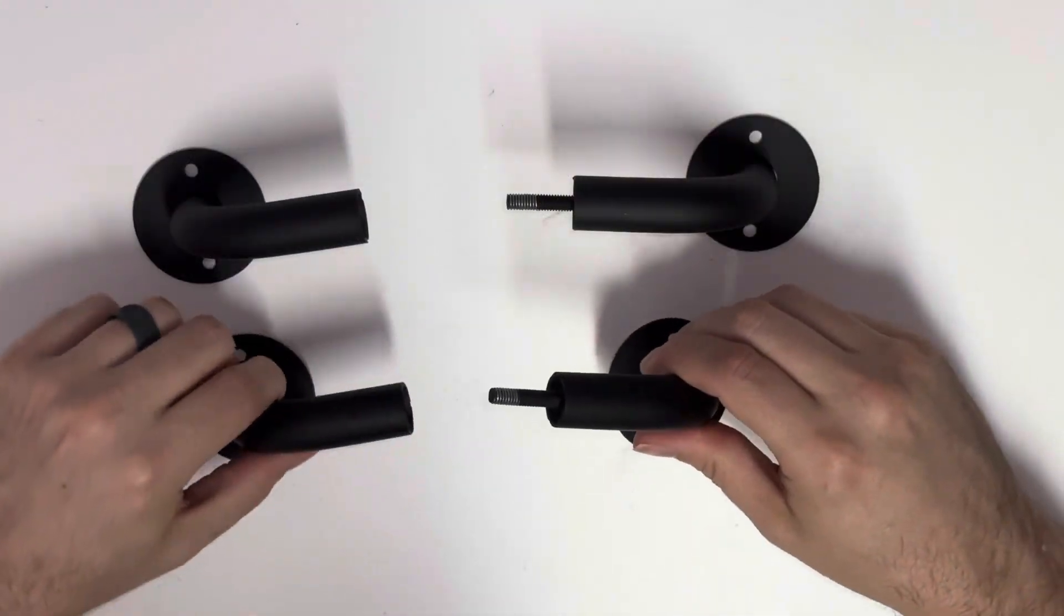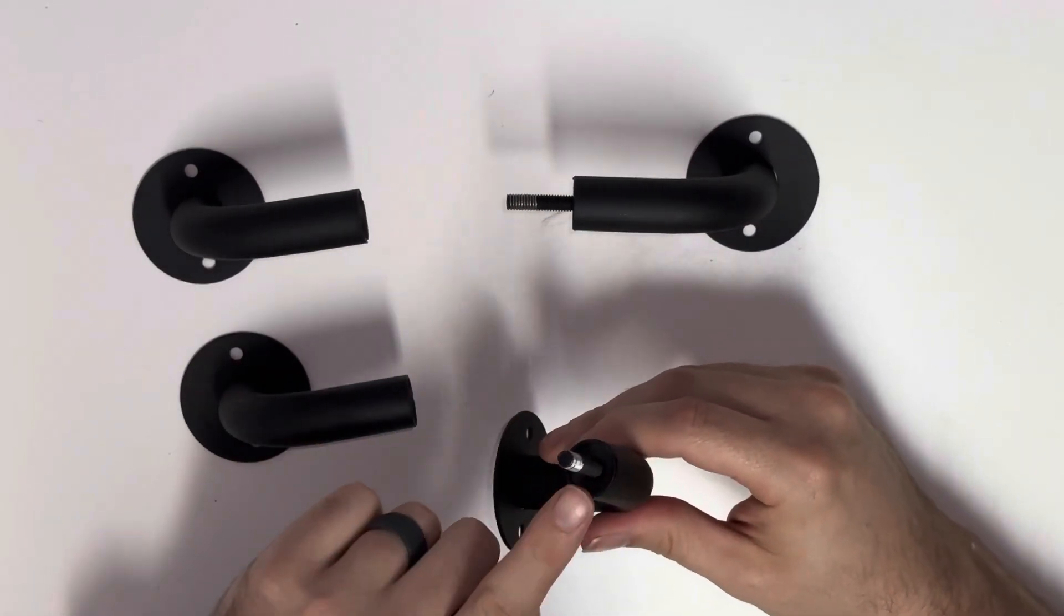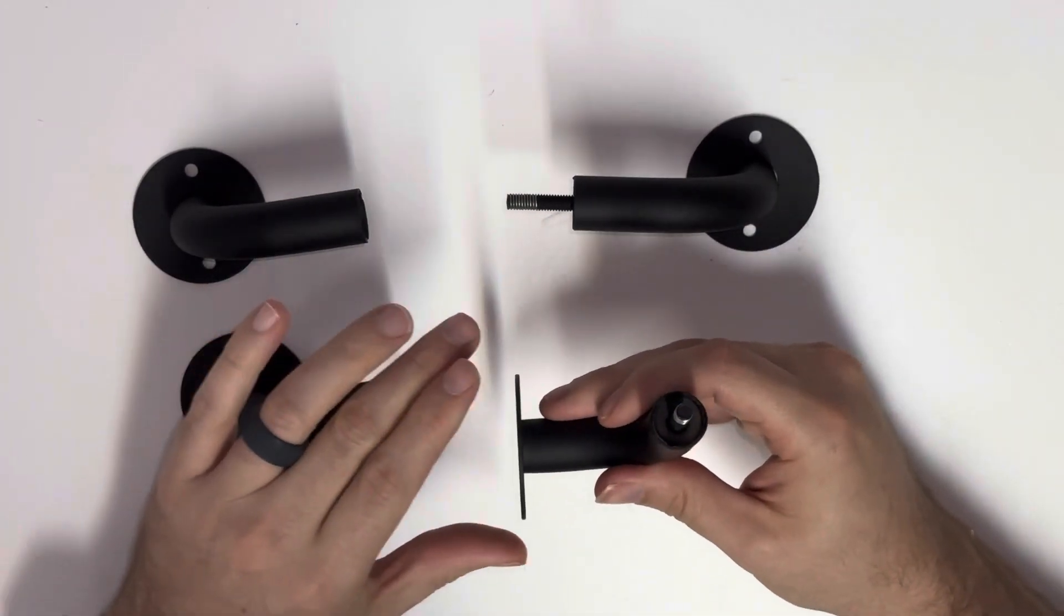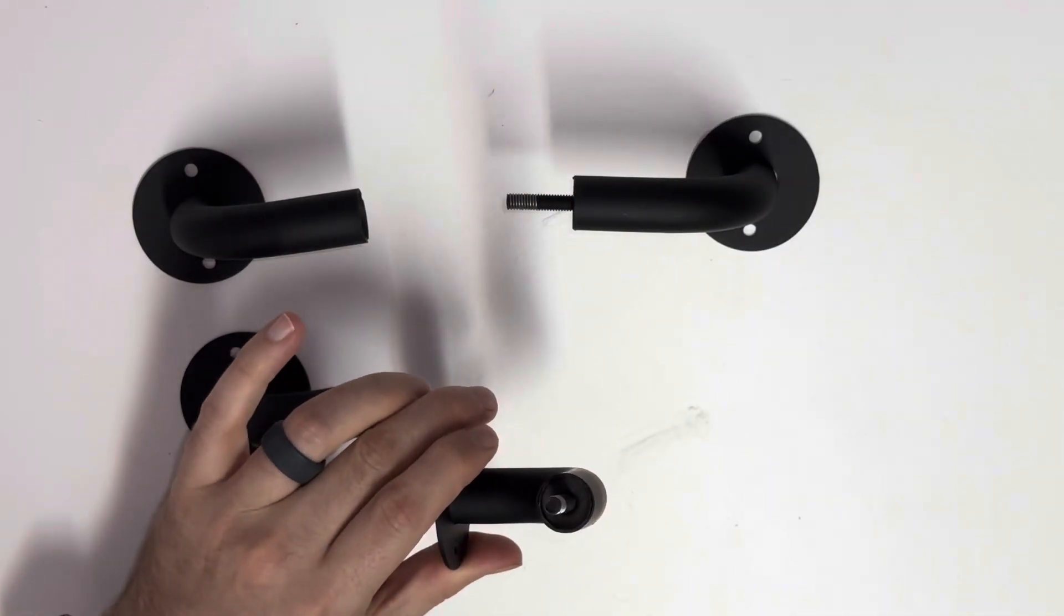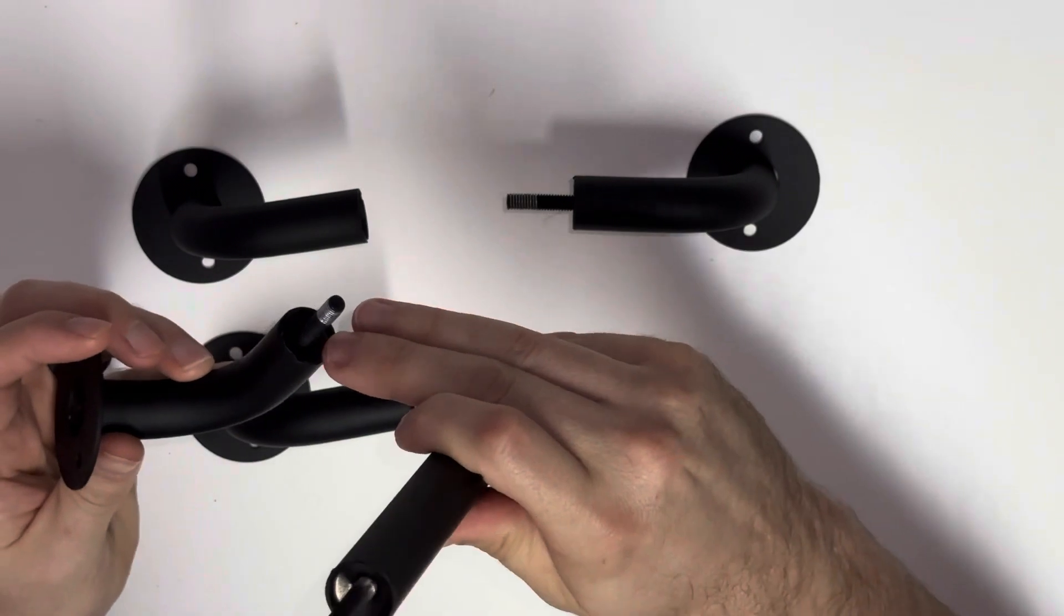The first thing you want to take note of is that this is the bottom bracket, the male end. It'll go on bottom, and then you will have one of these pieces that thread onto it with the shelf in between.